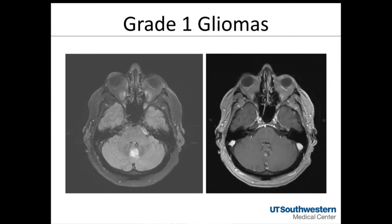Here is a 60-something-year-old man who presented with dizziness and was found to have a lesion in his midline posterior fossa arising from the vermis. You can see a nodule and cystic portion with an enhancing cyst wall, and non-enhancing disease on the FLAIR sequence. This was a pilocytic astrocytoma of the vermis, and he underwent gross total resection and did well.